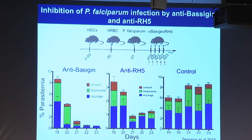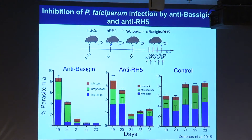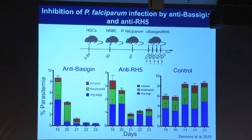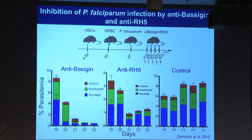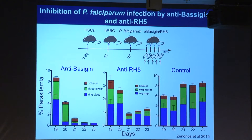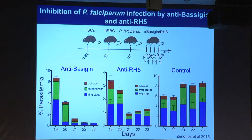You may wonder whether using an anti-host antibody has side effects. Clearly that is not a major concern, because the anti-basogen antibody was initially developed to treat cancer. It does not have major side effects, although it also does not have much effect on killing cancer. So this points to a possibility that it could potentially be used for treating infection.